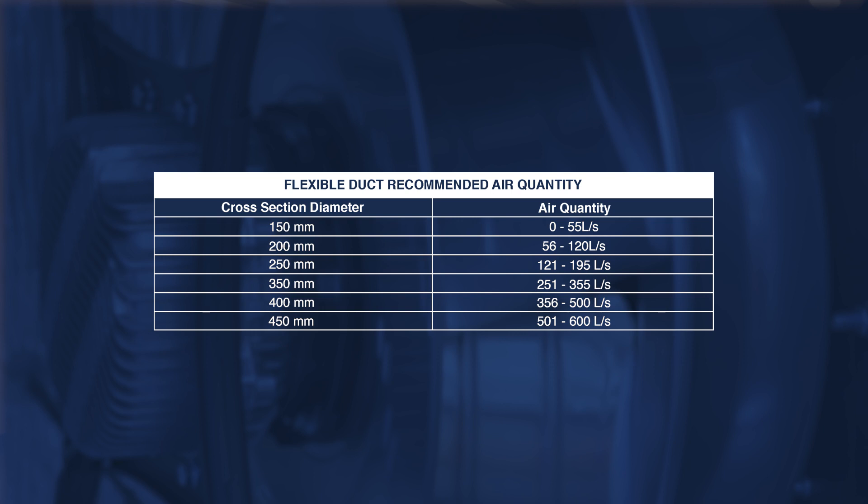Nominal airflow can be identified on the unit specification sheet. The return air flexible duct must also be capable of returning nominal airflow. Special attention needs to be considered when zone dampers are installed to assure that minimum airflow conditions are met regardless of zone operation.